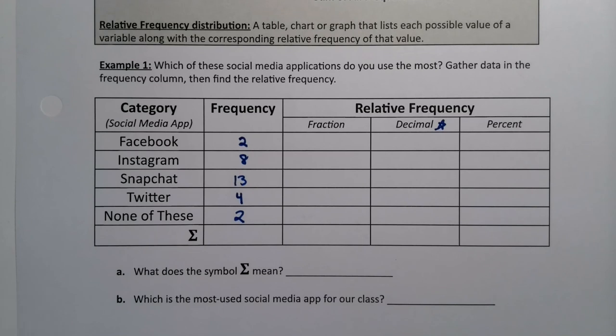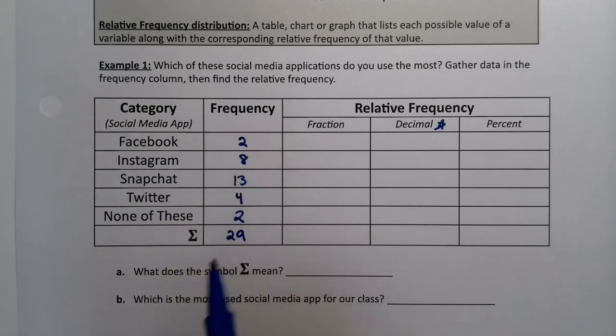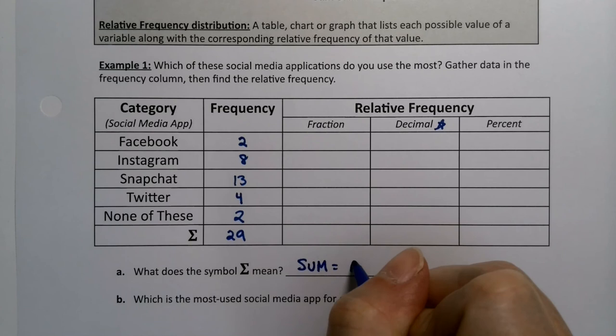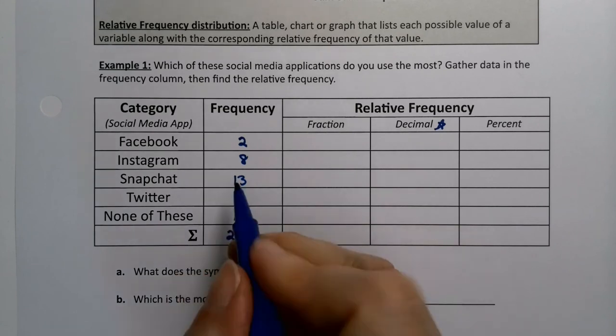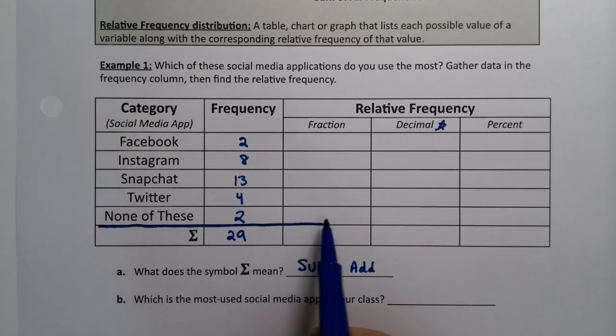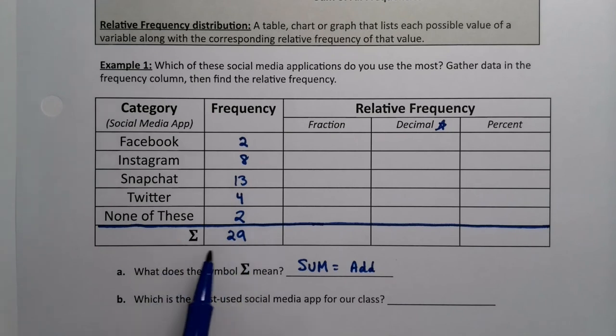There were 29 total students in the class. Now that little symbol right there is capital Sigma. If ever you're in Greece, that's the S sound. It means sum in math, or in other words to add. So you add up this column, and technically this little line right here delineates the end of the frequency distribution. The frequency distribution does not have to have this bottom row; I just often put it in there because I find it useful.